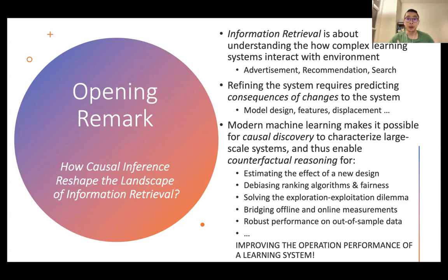The changes we make can include launching a new model, using a different set of features, or changing the displacements of the advertisement, recommended products, or search outcome. Modern machine learning has made it possible for causal discovery to characterize large-scale systems. We now have the capability to understand how the different causal factors affect the customer's behavior and their decision-making process. Those causal factors, particularly the causal relationships among them, differentiate themselves from previous associative analysis.